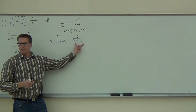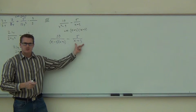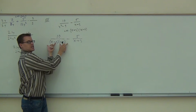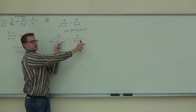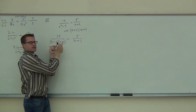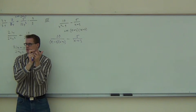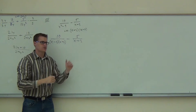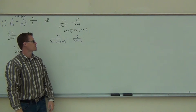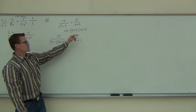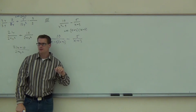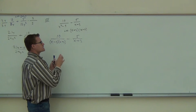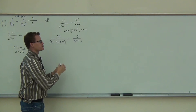Here's the issue: if you factor a denominator and you get the same factor twice within the same denominator—not spread between fractions—then you'd have to combine them and use the square. You've got to make it as simple as possible before you find your LCD. That'll take care of everything for you. So here we have our LCD.